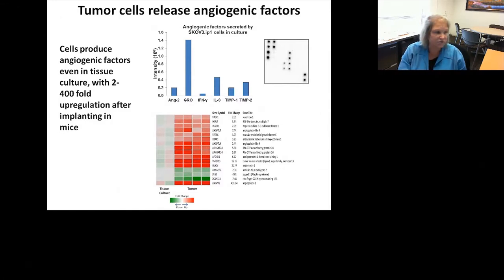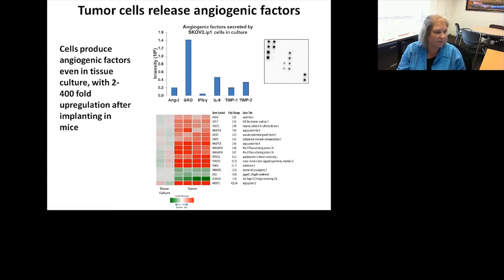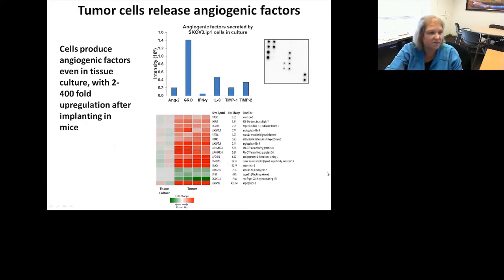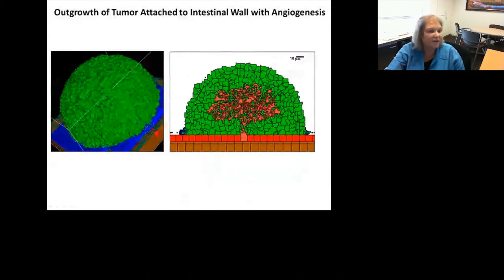That led us to look at what angiogenic factors this aggressive cell line produces. This suggested they must be making angiogenic factors extremely quickly, even before they get hypoxic. Indeed, we can see they make angiogenic factors even when in culture — IO8, ENG2, Temp1, and Temp2 — and they do increase some of these factors two- to 400-fold after implantation in mice. So it is an evolving situation.